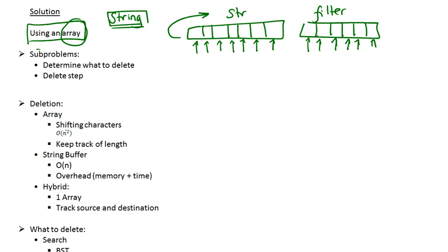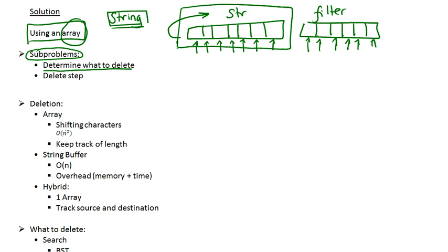The first thing you need to do when examining a big problem is dividing it into small problems. We realize here that we have two steps to the problem. The first one is to determine which character to delete — we have to delete specific characters from a given string, and now we know we're dealing with an array. We need to first determine which characters to remove. This is the first step, and the second step would be to perform the deletion.